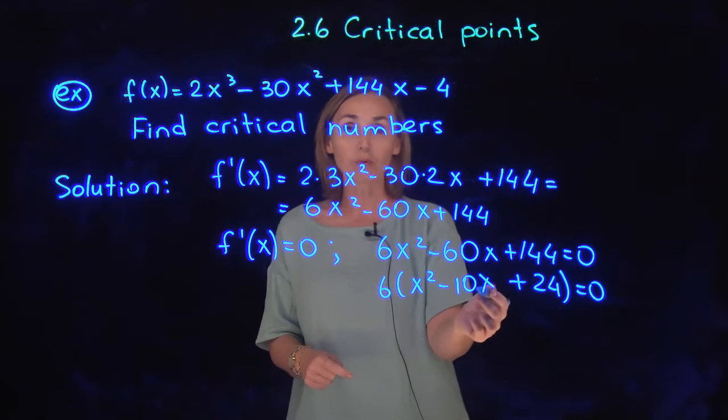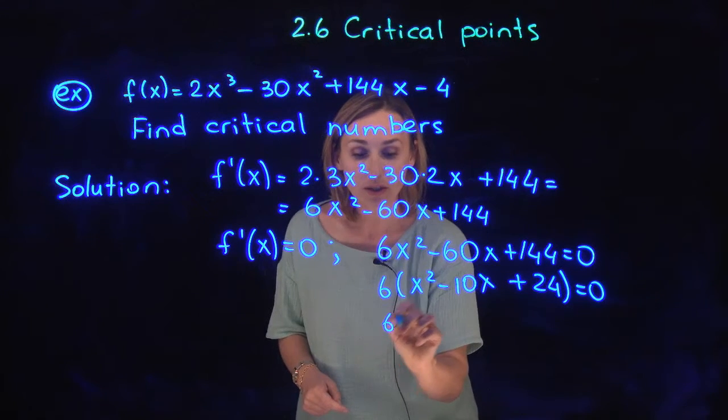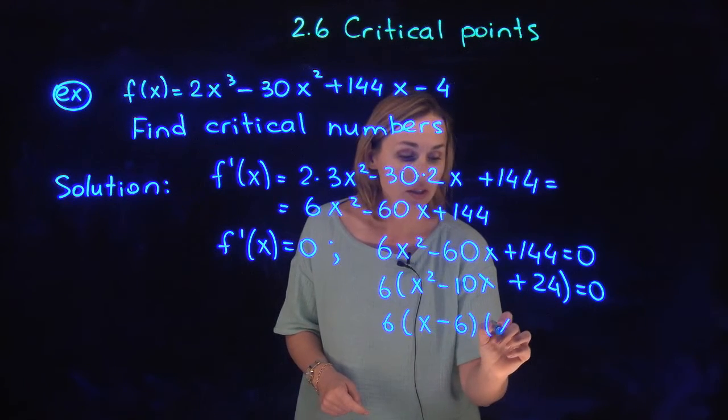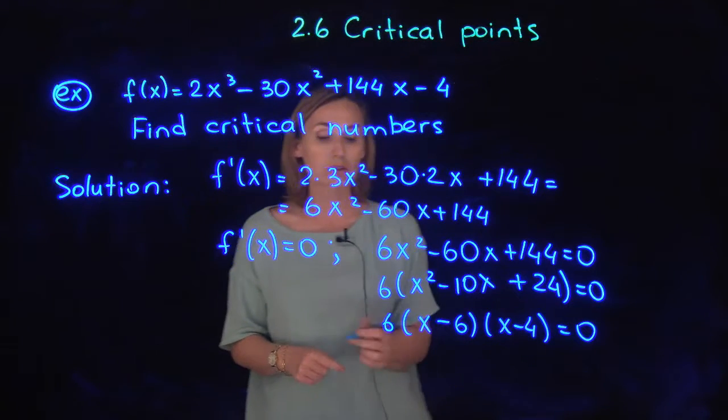Product is 24. When you combine like terms, the middle term is negative 10. So you will get x minus 6 and x minus 4 as a factored form of this quadratic trinomial.